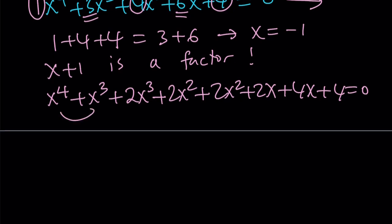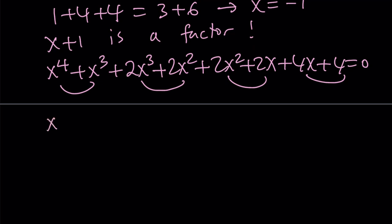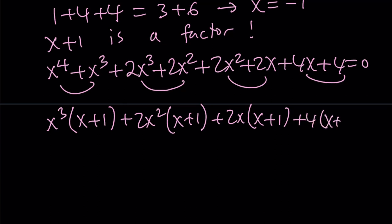Now we can factor this by grouping, and we should be getting something like this: x³(x + 1) + 2x²(x + 1) and then 2x(x + 1) and 4(x + 1), which confirms the fact that x + 1 is a factor.